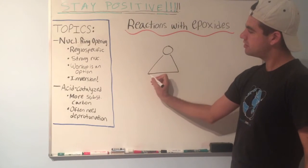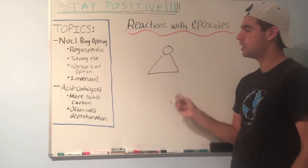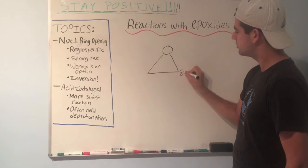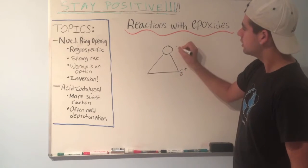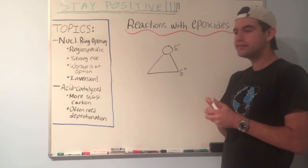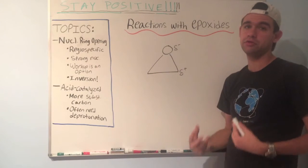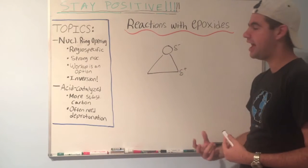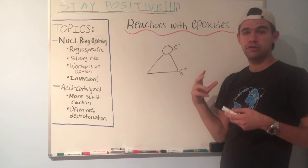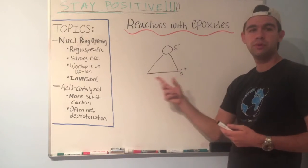Another property: this is a carbon-oxygen bond — that's a polar bond. So these carbons take on a delta-plus charge, and oxygen takes on a delta-minus charge. That makes these carbons electrophilic and even more susceptible to nucleophilic attack. So now we see why reactions with epoxides are so versatile — we can do a lot of things with these carbons.